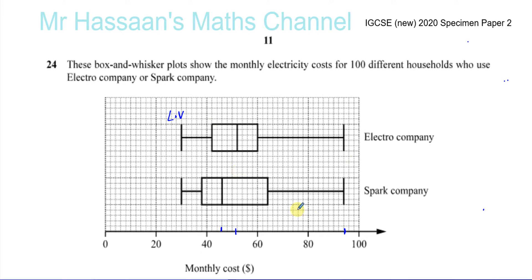Then you have the information in the middle part — the box. In the center of the box is what's called the median: the value that's right in the middle. That's given the term Q2. Q2 is a very important piece of information, and Q2 for the Electro Company is this point over here.